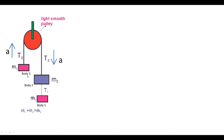We label the blocks as body one, body two, and body three. We need to find the acceleration of the blocks, which will be the same for all three, along with tensions T1 (in the string connecting m1 and m2) and T2 (in the string passing over the pulley). There are three unknowns, so we require three equations — one from each free body diagram.